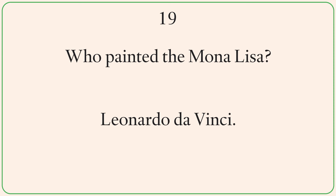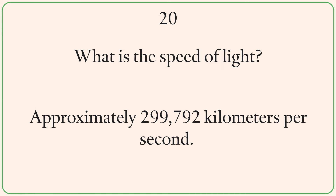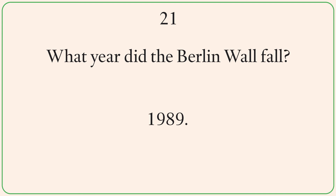Who painted the Mona Lisa? Leonardo da Vinci. What is the speed of light? Approximately 299,792 kilometers per second. What year did the Berlin Wall fall? 1989.